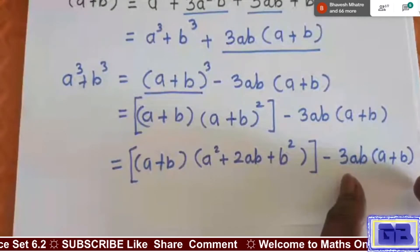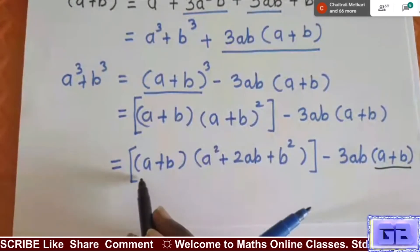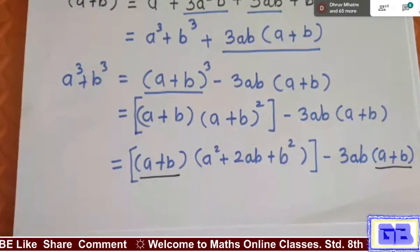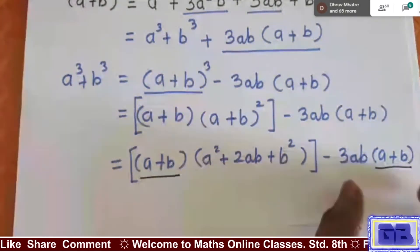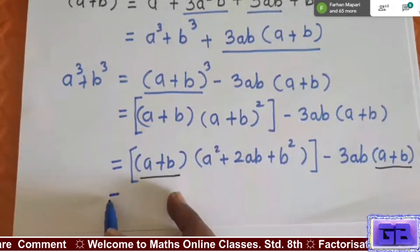If we compare this term and this term, what is common in both? Here (a+b), here (a+b) is there. So if we consider this and these terms, (a+b) we have to take common outside.